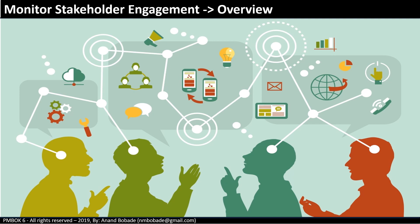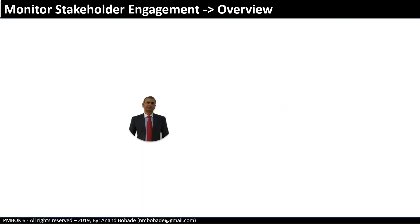Monitor Stakeholder Engagement is very critical because stakeholder engagement may change from time to time. For example, at the beginning certain stakeholders may be very enthusiastic and contributing immensely to the project, but this may change. In a software project, after an application walkthrough, a stakeholder may become disengaged because they believe once the system is live, they may lose their job. Monitoring helps the project manager identify such situations proactively and rectify them.